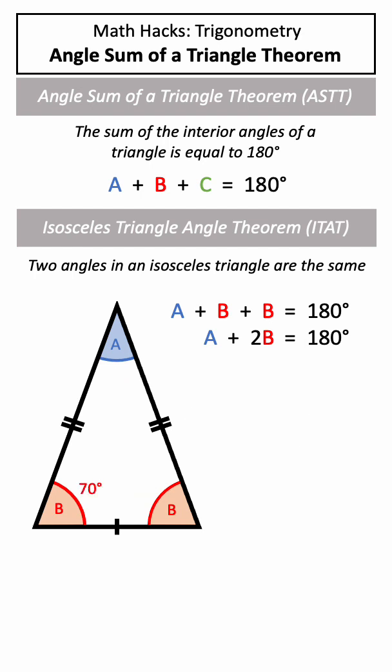If instead we are told one of the identical angles is 70 degrees, this means the matching angle will also be 70 degrees, and we can substitute this into our equation to solve for the unique angle being 40 degrees.